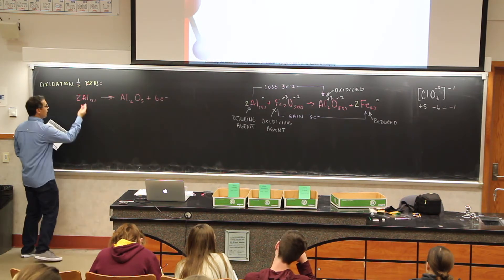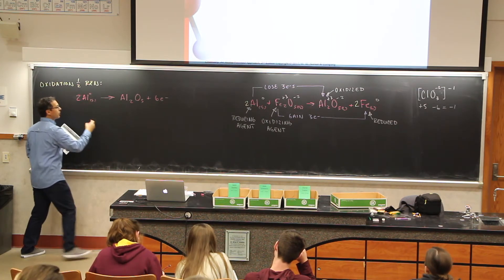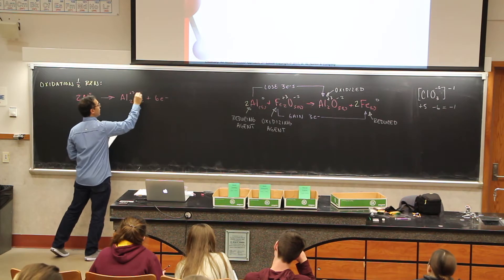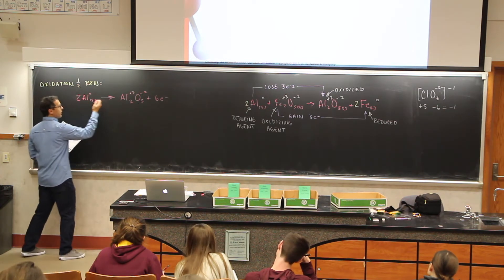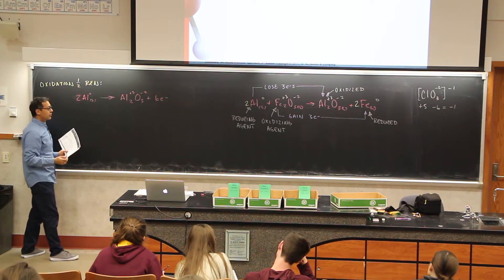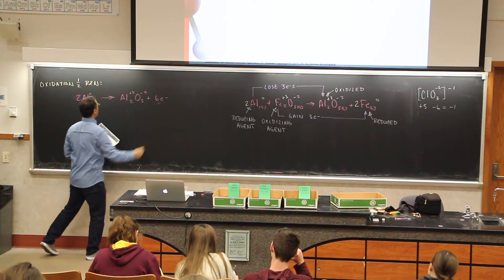So two aluminums are aluminums over here. Our aluminums become aluminum oxide plus six electrons. That is to say we have two aluminums here. Charge is the oxidation number is zero. Here it's plus three. Here it's a minus two. To go from here to here we had to lose six electrons. Each aluminum lost three. So that's why we end up with six over here.